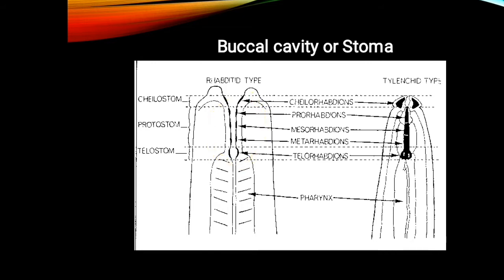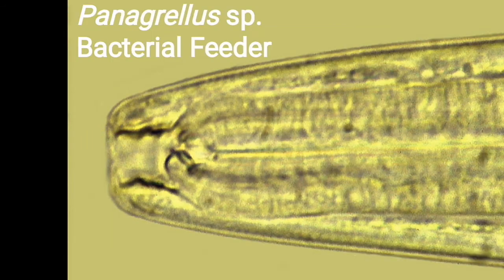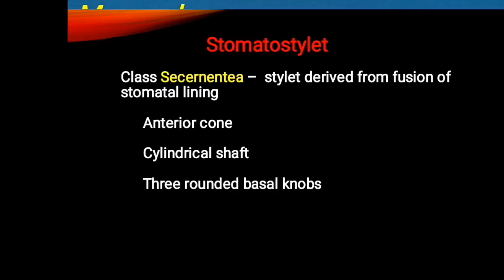Regarding the stoma buccal cavity: in the case of rhabditids there is no stylet, but in the case of tylenchids there is a stylet. In the rhabditid group, there is no stylet — only a stoma opening. Panagrellus, which is a bacterial feeder, also has only a stoma opening with no stylet. Mononchus is a predator having a mural tooth.